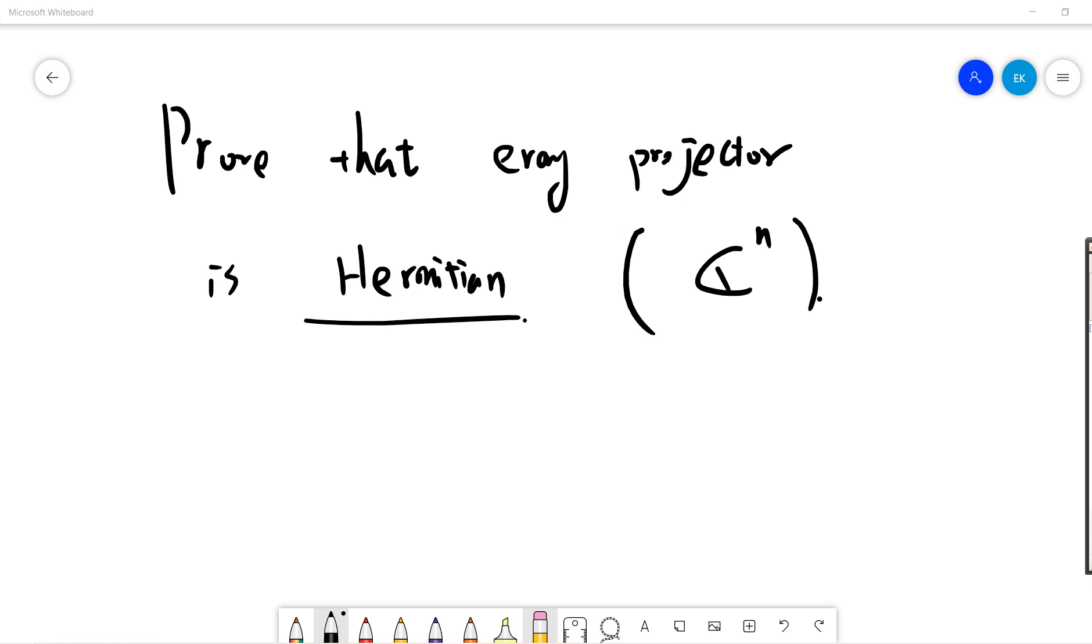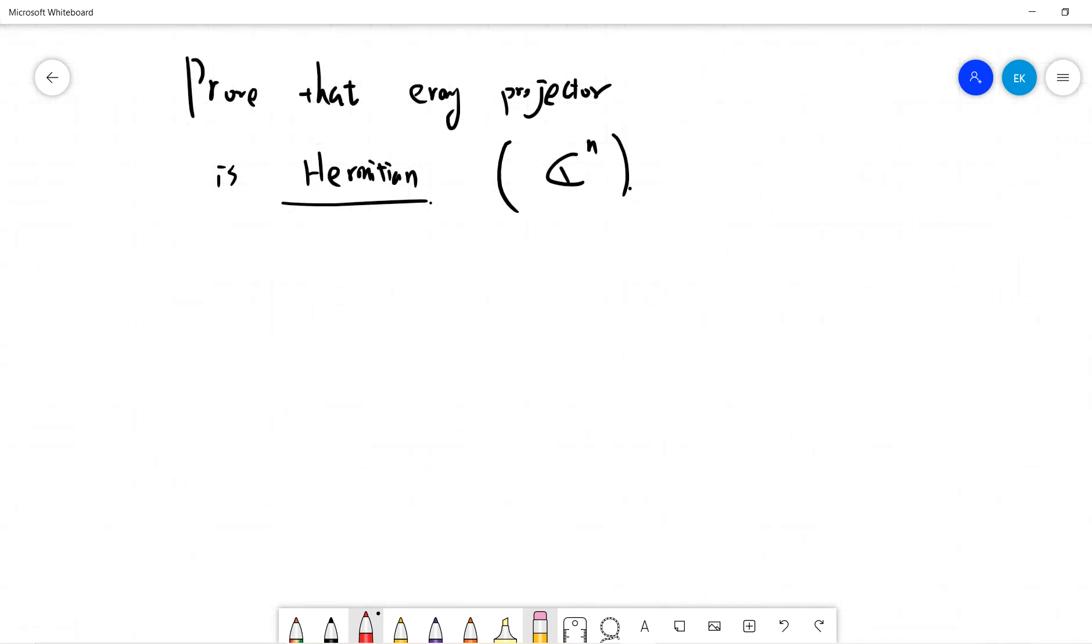Oh, welcome guys. So in this video, we are just trying to prove this linear algebra fact. Although I would say this is correct, I have not yet given a proof. Okay, so let's say every projector in the complex CN is Hermitian.